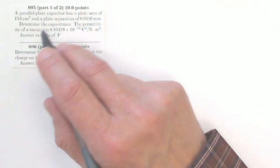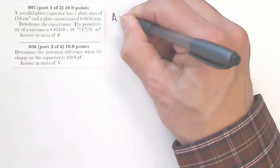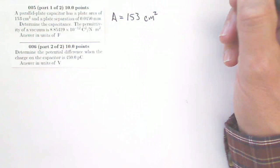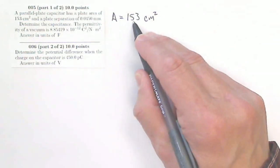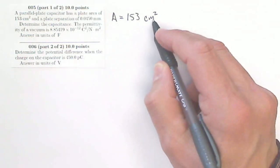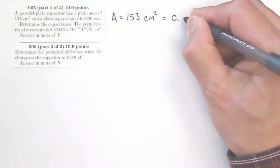A parallel plate capacitor has a plate area of 153 centimeters squared. Be careful, that's not 1.53 meters squared, because this is a square centimeter, so I have to do this conversion twice. So my area is actually going to be 4 decimal points over.